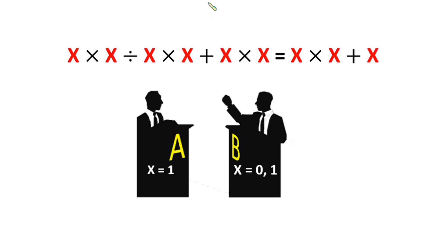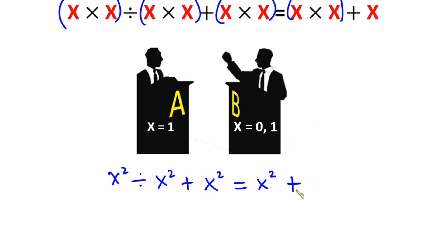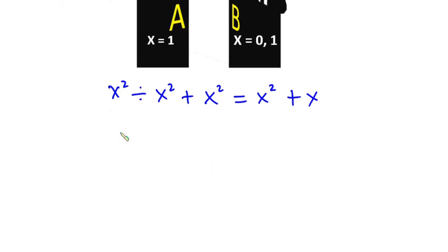Now let's get started with contestant A. According to contestant A, we have brackets grouping the terms: x times x is x squared, divided by x times x which is also x squared, then plus x times x which is x squared, and this equals x times x plus x, which is x squared plus x. So we have x squared divided by x squared, plus x squared, equals x squared plus x.